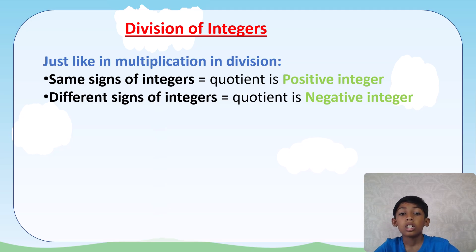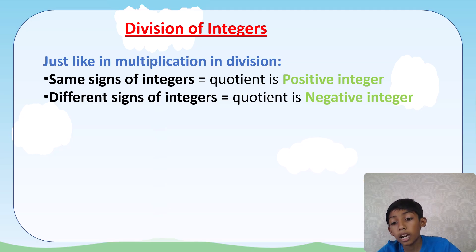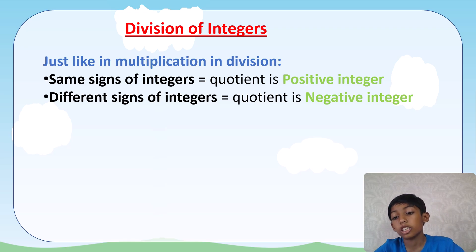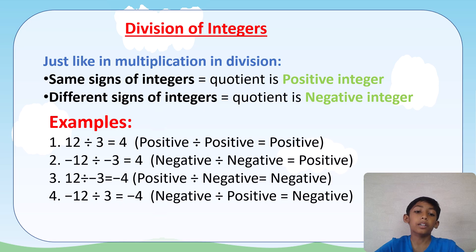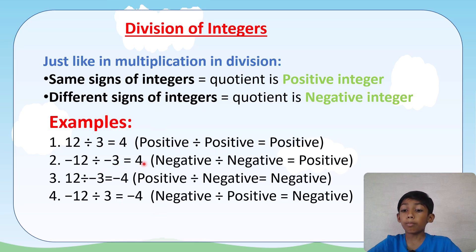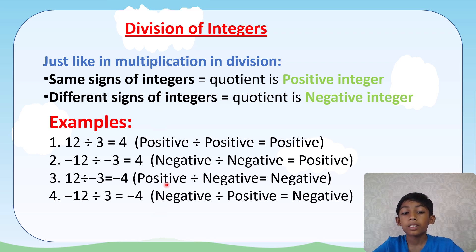If you divide a negative integer by a negative integer, the answer is also a positive integer. If the signs are different — like (−3) ÷ 1 equals a negative integer, or 1 ÷ (−3) also equals a negative integer. For example: 12 ÷ 3 = 4 (positive ÷ positive = positive); (−12) ÷ (−3) = +4 (negative ÷ negative = positive).